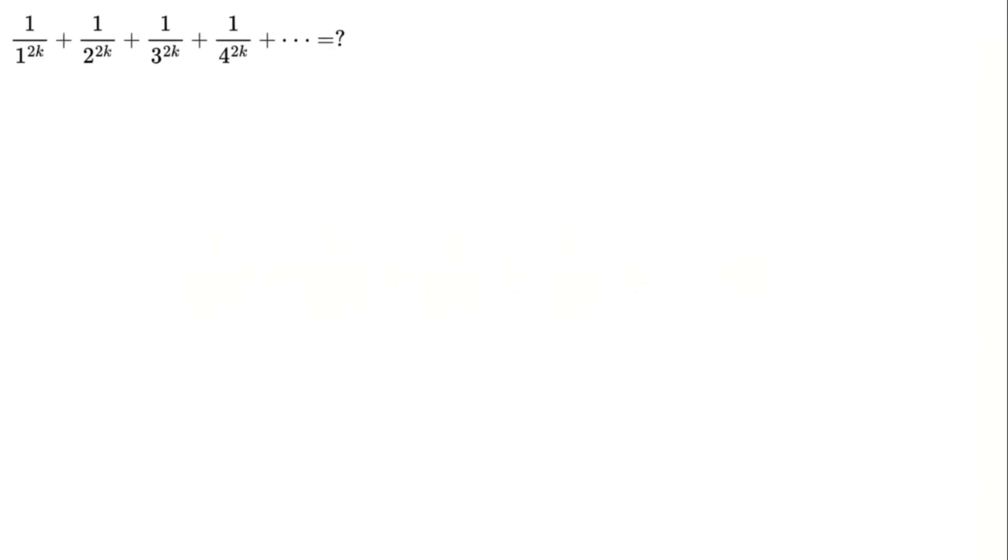First, let's frame the problem. Imagine a series where you sum 1 over 1 to the power of 2 times k, plus 1 over 2 to the power of 2 times k, and so on. Here k is a natural number. For the Basel problem, k equals 1, which means we are tackling the infinite sum of inverse squares.